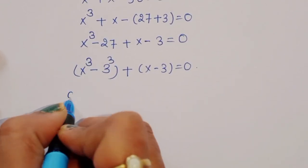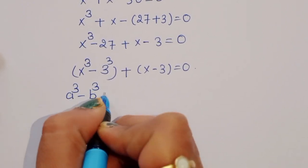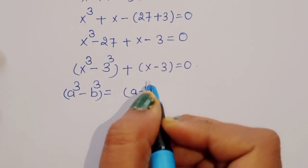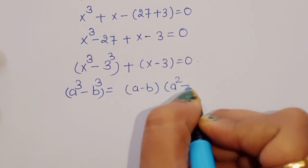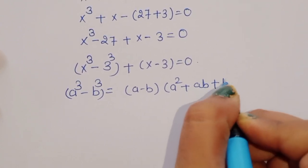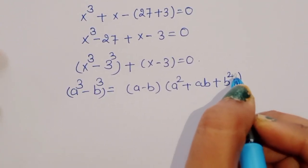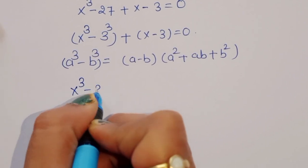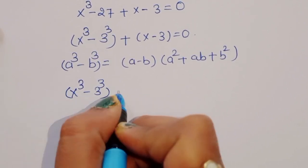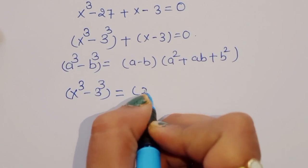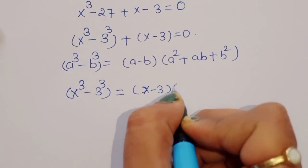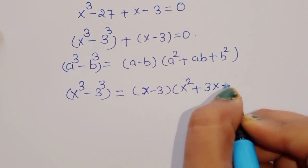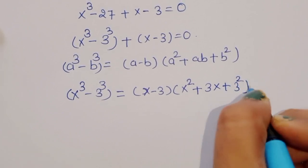We can write this as x³ − 3³ + x − 3 = 0. We know the formula: a³ − b³ = (a − b)(a² + ab + b²). Using this formula, x³ − 3³ = (x − 3)(x² + 3x + 3²).